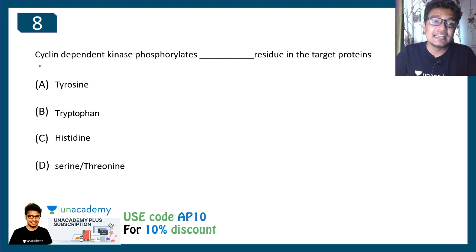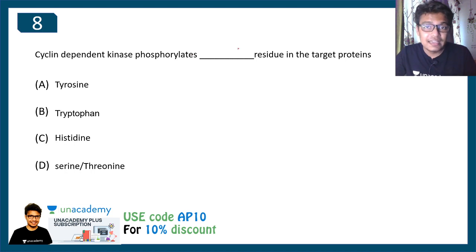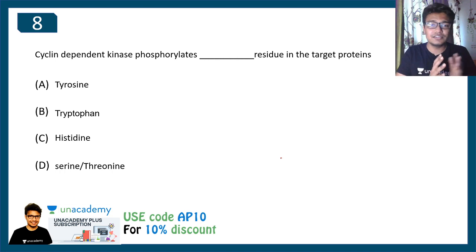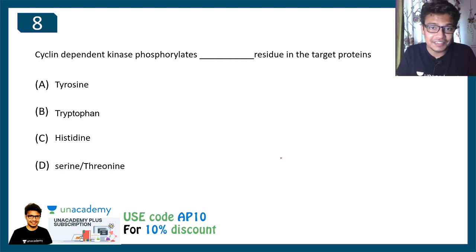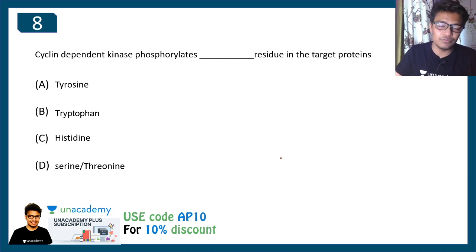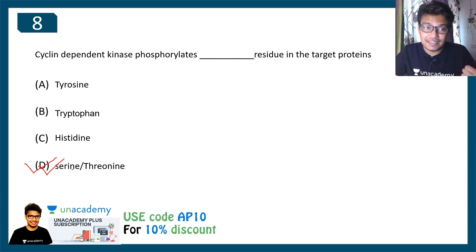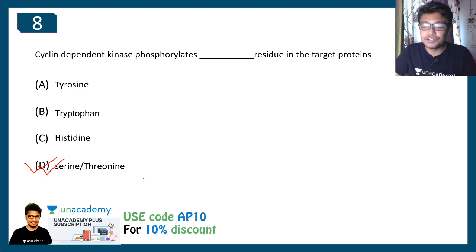Question eight: cyclin-dependent kinase phosphorylates which residue in the target protein? Cyclins and CDKs are partners and act as kinases with phosphorylating activity. The question is: which residue do they phosphorylate, and what type of kinase are they? The answer is that they are serine-threonine kinases. This is in contrast to the MAP kinase signaling pathway, which involves tyrosine kinases — so this distinction is really important.